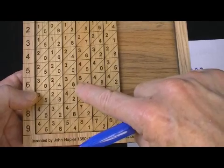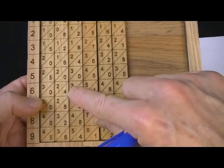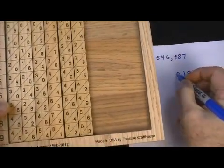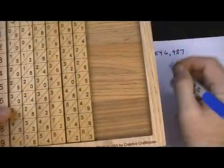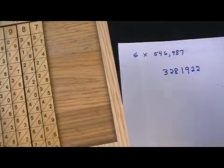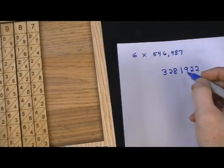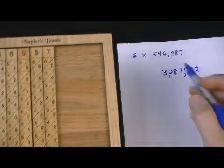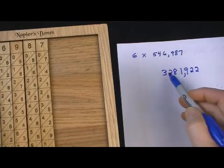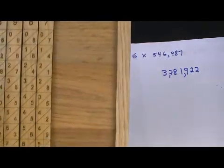I come over here and 6 plus 5 is 11. So I'm going to keep the 1 and carry the 1 over to the 4 plus 3 plus 1, which is 8. Then 0 plus 2 is 2, and then a 3. So the answer to 6 times 546,987 is 3,281,922. See how simple that is?